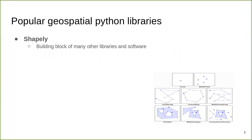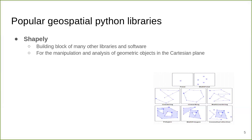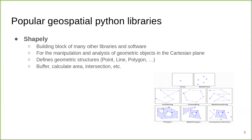Shapely is the building block of many other libraries and software. It is used for the manipulation and analysis of geometric objects. It defines geometric structures such as points, lines, and polygons, and translates them to internal Python data structures. It also provides functionality for basic geometric operations such as computing buffer zones, calculating areas, and doing spatial intersections. It is based on GEOS, the Geometry Engine Open Source software.